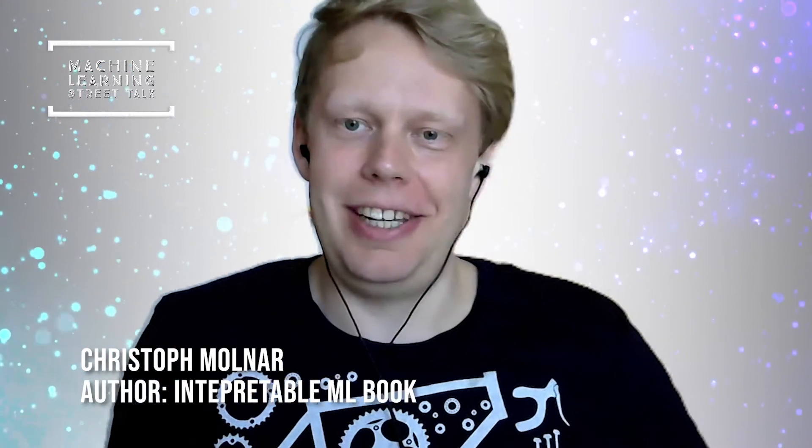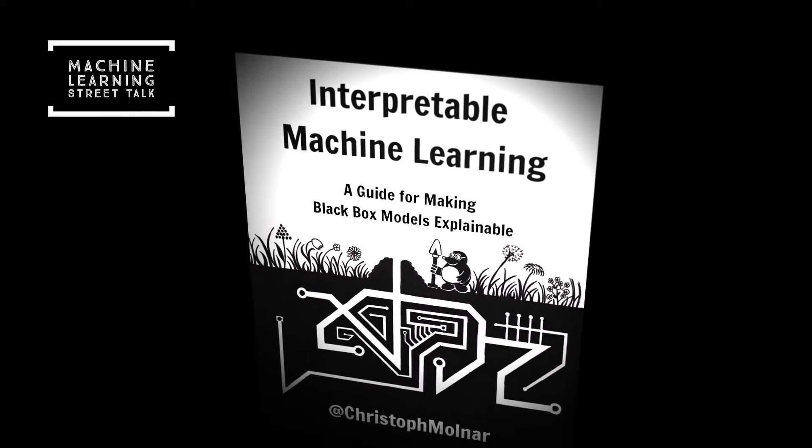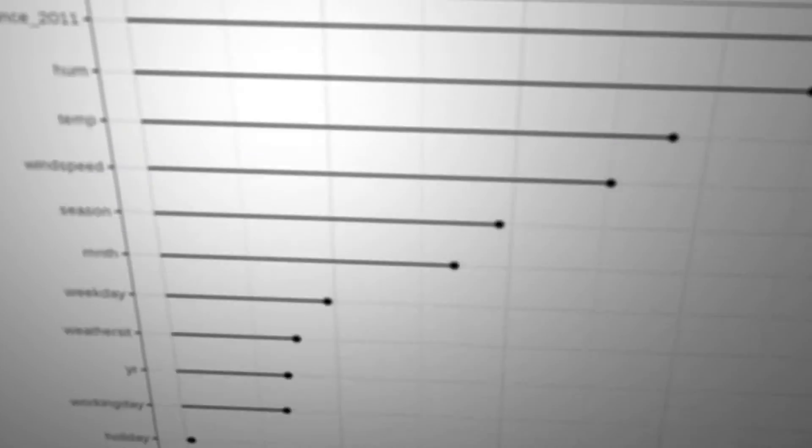So maybe with this awesome new interpretability toolkit, we can start to dispel that myth that machine learning models are all just black boxes that can't be understood and can't be trusted. Christoph Molnar is one of the most important people in the interpretable machine learning space. In 2018, he released his magnum opus, Interpretable Machine Learning: A Guide for Making Black Box Models Explainable. Interpretability is often a deciding factor when a machine learning model is used in a product, a decision process, or research. Interpretability methods can be used to discover knowledge, to debug or justify a model and its predictions, to control and improve the model, to reason about potential biases, and to increase the societal acceptance of models.